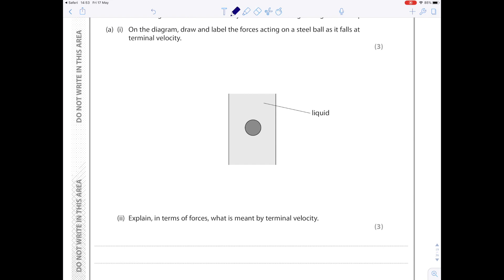They often ask you to draw the forces acting on various objects. So on the diagram, draw and label the forces acting on the steel ball as it falls at terminal velocity. So what's acting downwards? Well, it's the weight of the ball, and acting upwards will be drag. And notice that it's at terminal velocity, which means that these forces must be equal, which is why we have to draw equally length arrows.